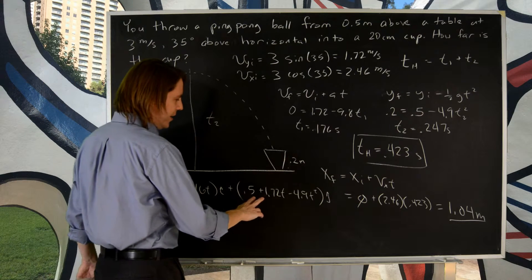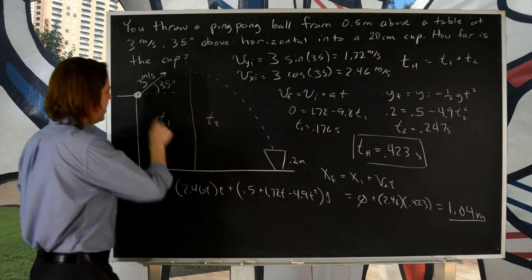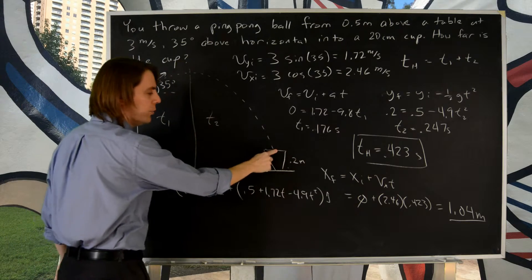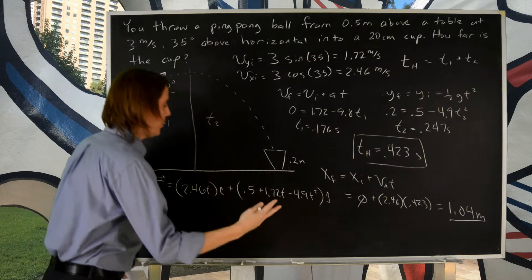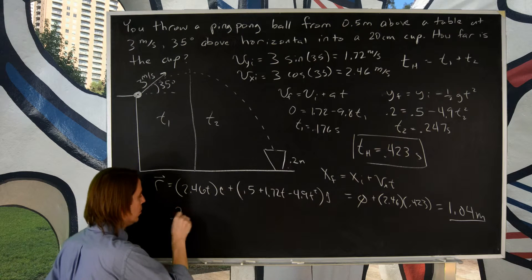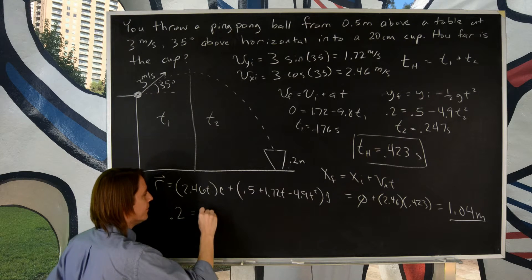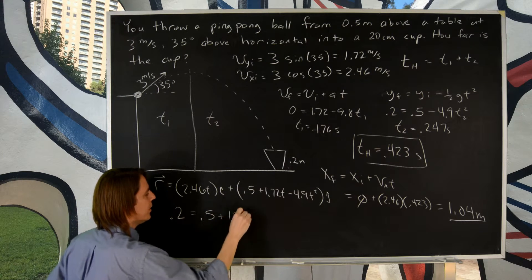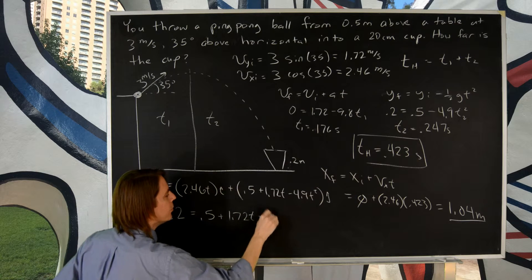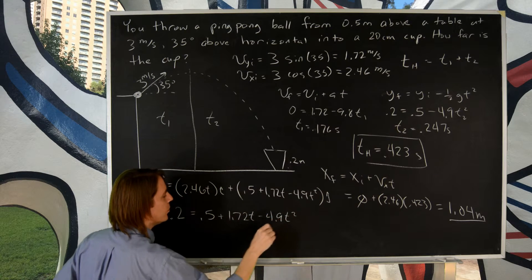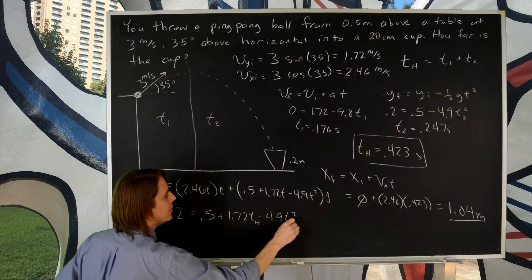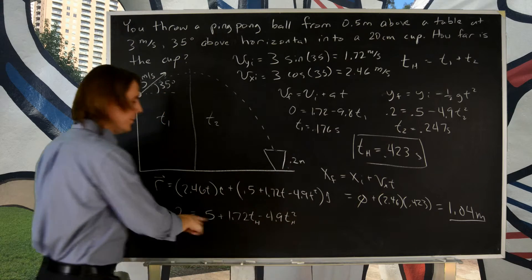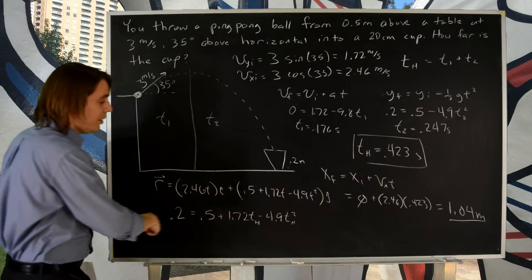The way you'd do that is you'd say, how long was it in the air? Well, you would want to figure out the time when y equals 0.2. So you would literally just say 0.2 equals 0.5 plus 1.72t minus 4.9t squared. And this is now the hang time. And you'd solve that for t. And you can see now you have sort of a mess. Now you have a polynomial.